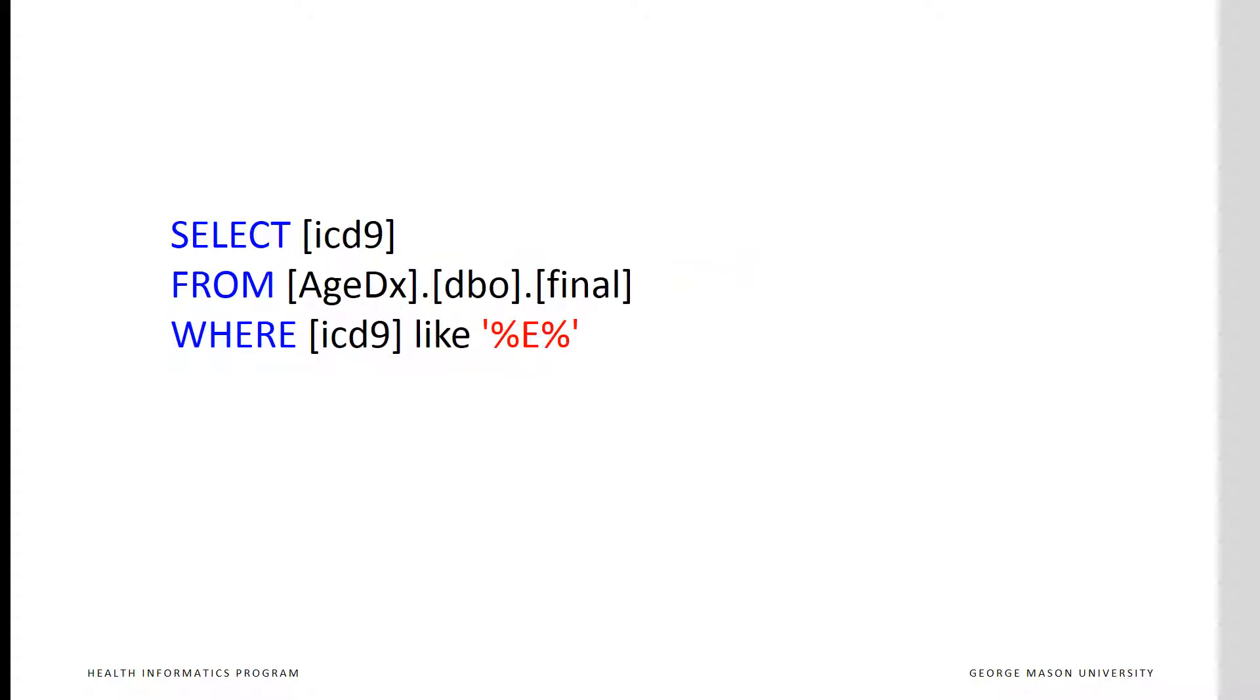For example, we might have a table of claims called final. In it we have different ICD-9 codes. We want to restrict it to patients who had a claim of injury, a code with a letter E in it. The WHERE command specifies that we should have all ICD-9 codes where the letter E appears somewhere inside the code.